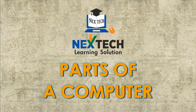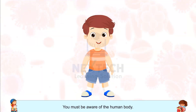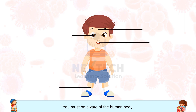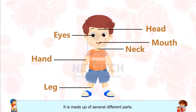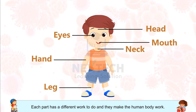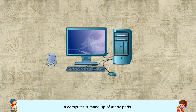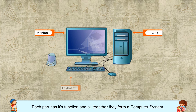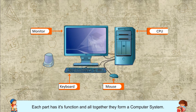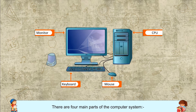Parts of a Computer. You must be aware of the human body — it is made up of several different parts. Each part has a different work to do and they make the human body work. Same as the human body, a computer is made up of many parts. Each part has its function and all together they form a computer system. There are four main parts of the computer system.